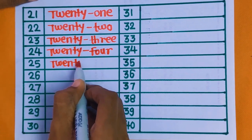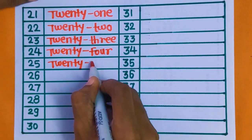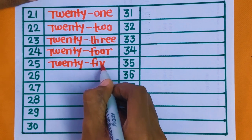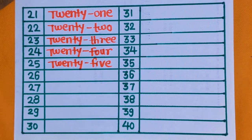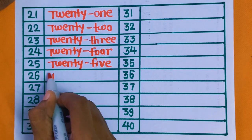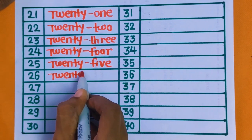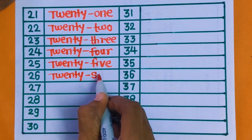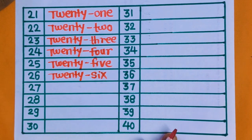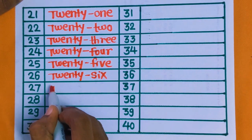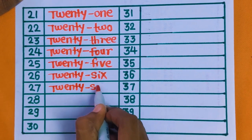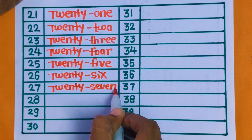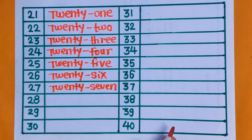FIVE. 25. Next is 26 — TWENTY SIX. 26. Next number is 27 — TWENTY SEVEN. 27.